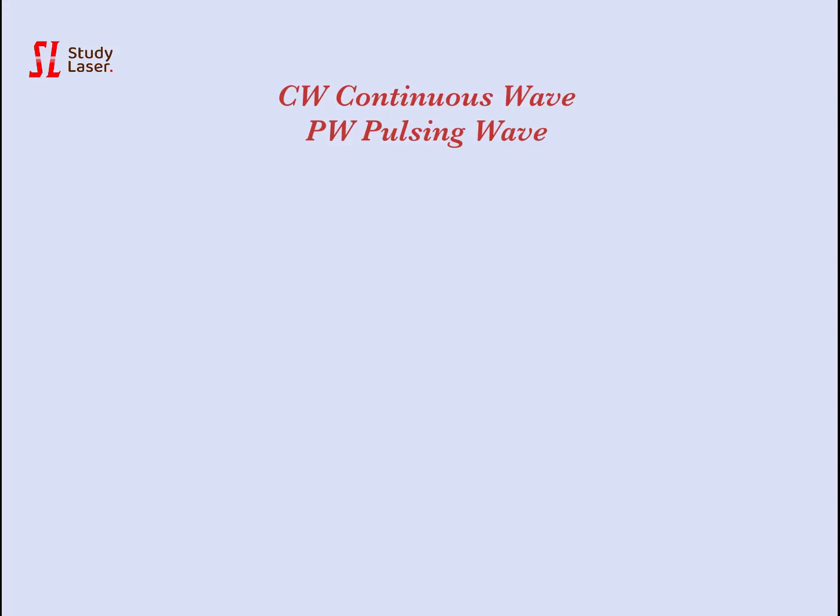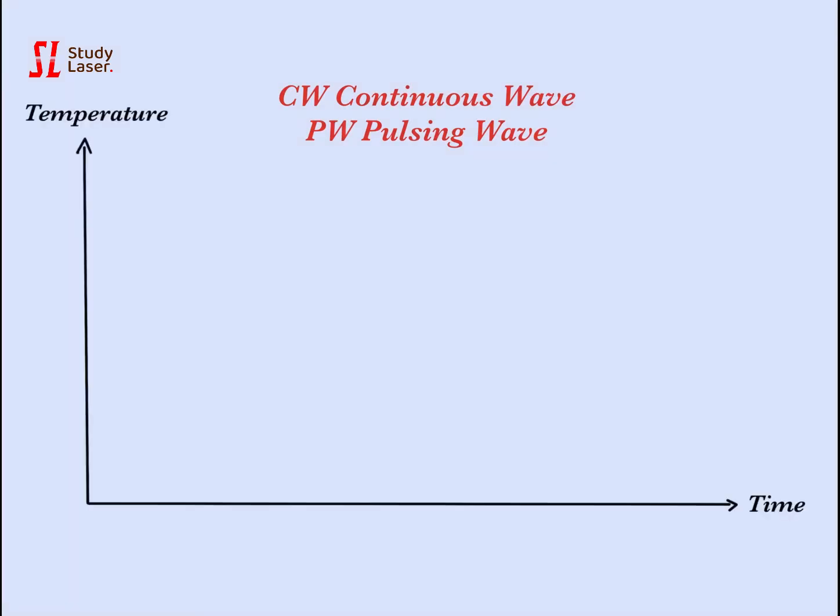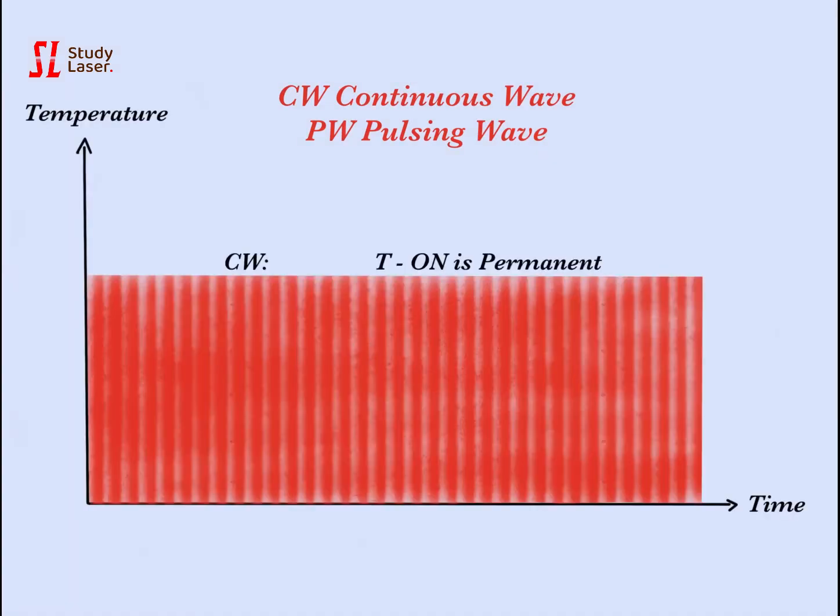Surgical lasers can emit photons in a continuous wave, CW, or in pulsing mode, PW. In continuous wave mode, the T-on — also called the period when the laser is emitting — is constant.